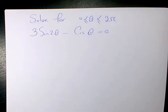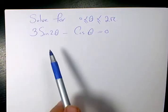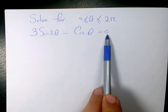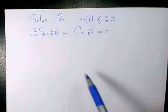start now by subscribing and clicking the bell so you don't miss anything. The trigonometric equation I want to solve in this video is 3 sine 2 theta minus cosine theta equals 0, and we need to solve it for theta which is changing from 0 to 2 pi.